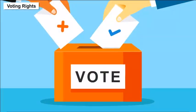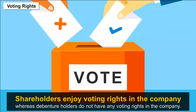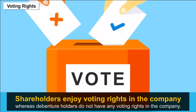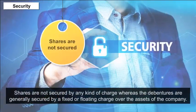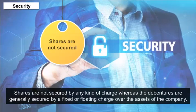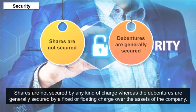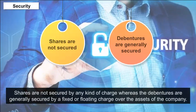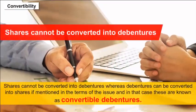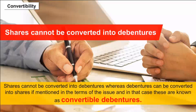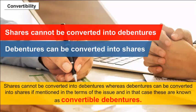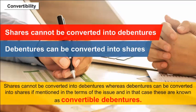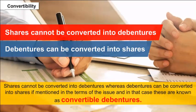Voting Rights: Shareholders enjoy voting rights in the company, whereas debenture holders do not have any voting rights. Security: Shares are not secured by any kind of charge, whereas debentures are generally secured by a fixed or floating charge over the assets of the company. Convertibility: Shares cannot be converted into debentures, whereas debentures can be converted into shares if mentioned in the terms of the issue, and in that case these are known as convertible debentures.